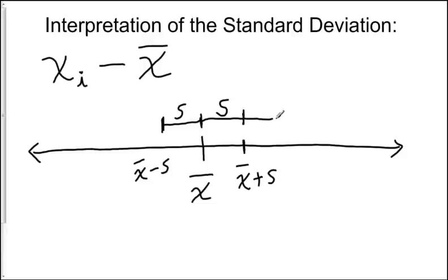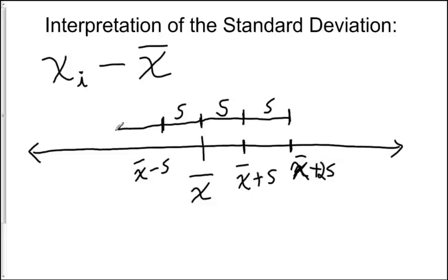If we go another S units further out, we reach X-bar plus two S's, which is quite far away from the mean — it's twice the average distance. That's about twice as far as the average value would be from the mean. Going the same distance in the negative direction gives X-bar minus two S. Values getting that far out are beginning to be more and more rare.